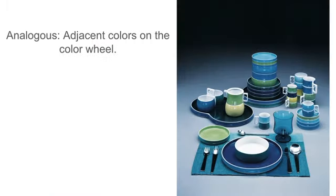An analogous color scheme uses adjacent colors on the color wheel. So in this image we're seeing blues and greens and a few yellows. These are all colors that are right next to each other on the color wheel.